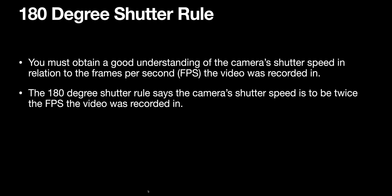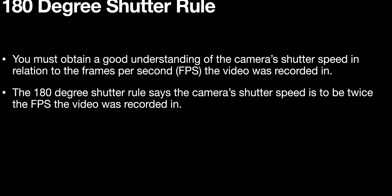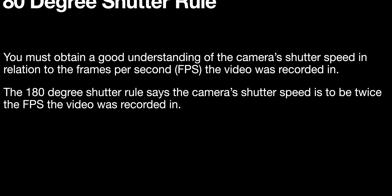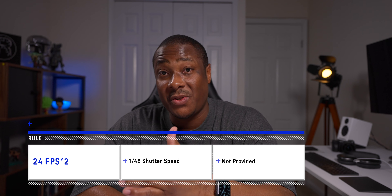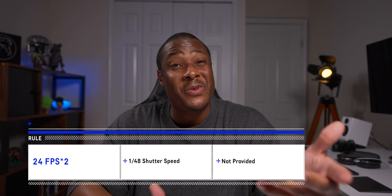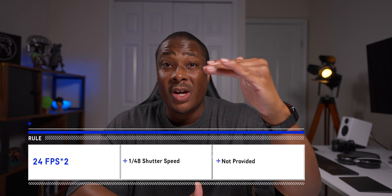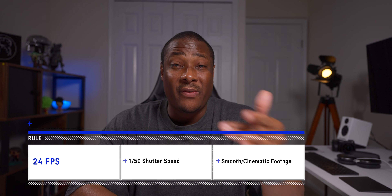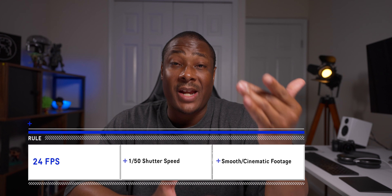The 180 degree shutter rule is a principle that states the camera's shutter speed should be double the frames per second the video was shot in. For example, if you shoot at 24 frames per second, 24 times 2 is 48, but since we generally don't have 1/48th in our shutter speed, the next one above will suffice, which is generally 1/50th. So 24 frames per second at 1/50th of a second on the shutter speed will give us smooth cinematic footage.